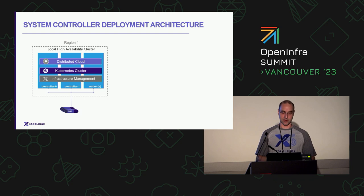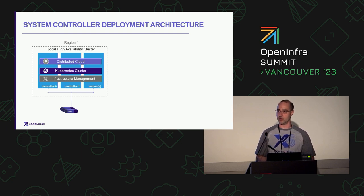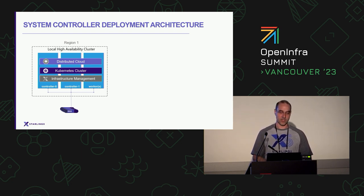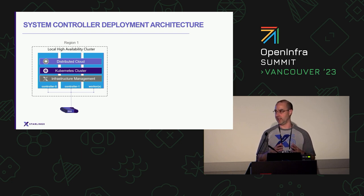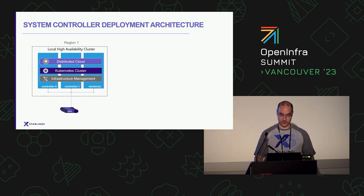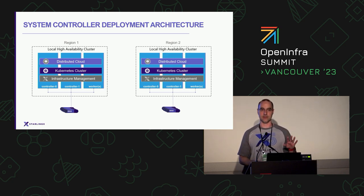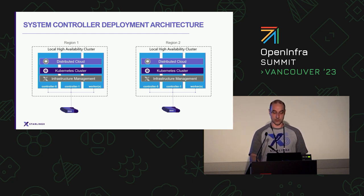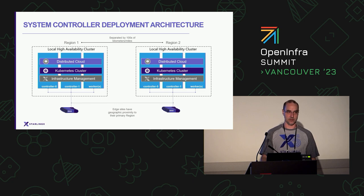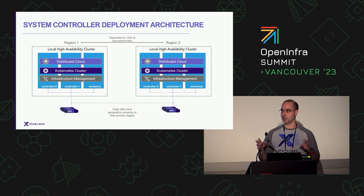Starting with our system controller design, the central systems run a local high availability cluster. What I'm showing is a bare-metal deployment with our typical StarlingX deployment — two controllers and a number of worker hosts. Depending on the scale of your distributed cloud, you have different physical server configurations. The general principle is that you have a local Kubernetes cluster with high bandwidth, low latency networking contained within that data center, and the edge sites are remote distributed systems.